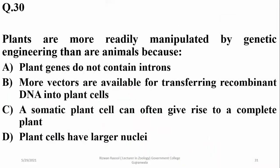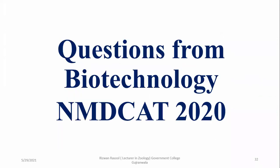Plants are more readily manipulated by genetic engineering than animals because a somatic plant cell can often give rise to a complete plant. We can make a genetic change in any somatic cell and then produce an entire new plant from that cell.